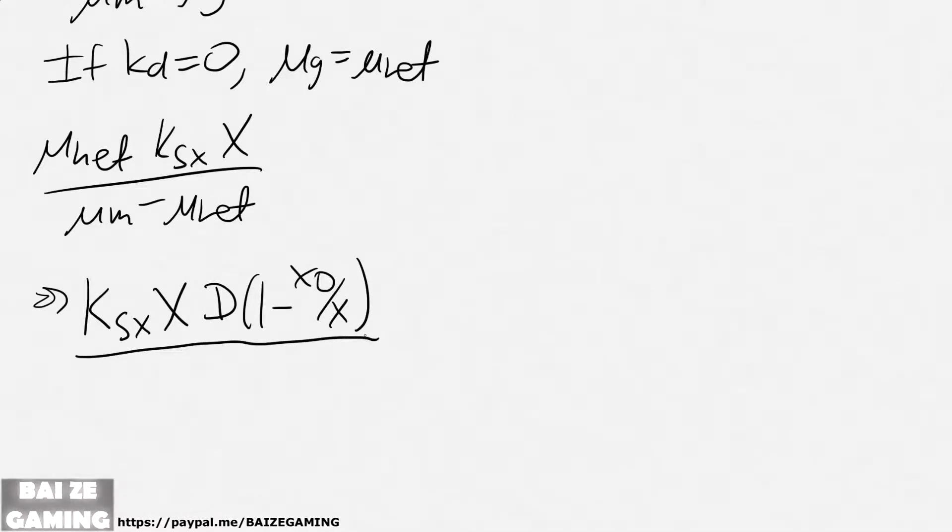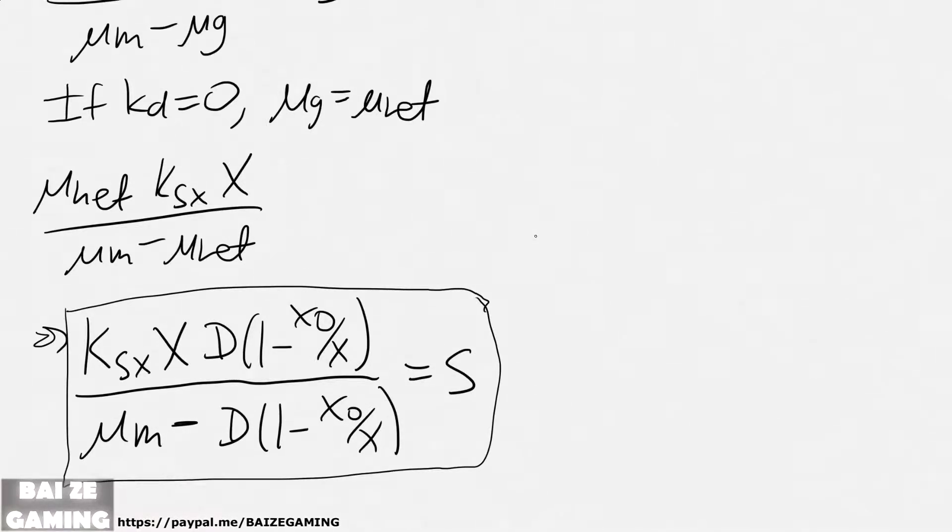And yeah, you just substitute that in for this D part. It's just μₙₑₜ, and then the denominator will do that too. And yeah, that's it. I mean, you can simplify it further. I don't think you'd want to because the X over there, it's so messy. But yeah, you can substitute in the X values.